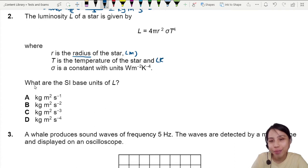T is the temperature of the star in kelvins. Sigma is some, don't know what fancy thing, well a bunch of units there. So what are the base units of L?